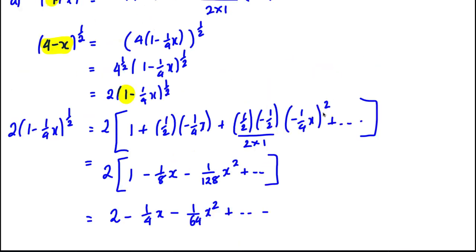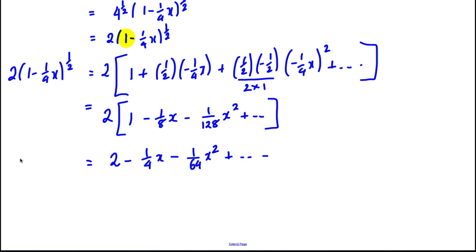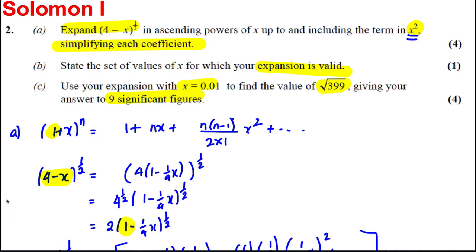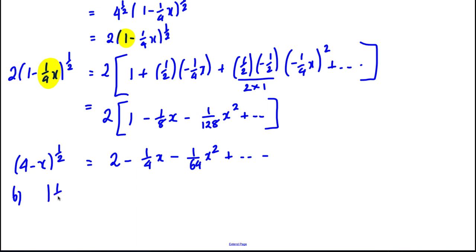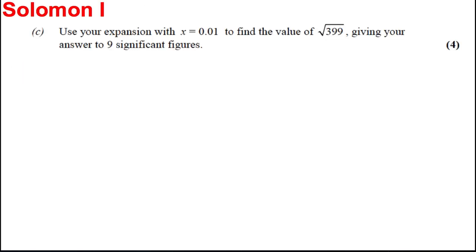For part b, when is this expansion valid? The expansion is valid when the modulus of x/4 is less than 1, which means the modulus of x must be less than 4. So make sure you're familiar with that — the modulus of the substituted term must be less than 1, giving us |x| < 4.